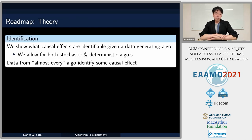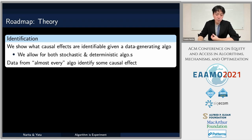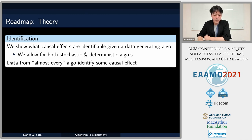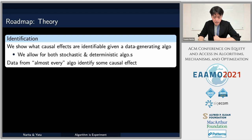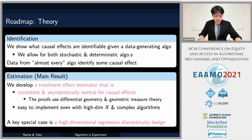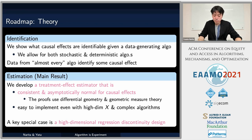The agenda is to formalize and operationalize this intuition as a widely applicable estimator of treatment effects. We start with an identification analysis that exactly characterizes what causal effects we can identify when we have data coming from a data-generating algorithm. We provide this identification analysis for a broad class of algorithms containing both stochastic and deterministic algorithms, and this analysis clarifies that data from almost every algorithm allows us to identify some causal effect.